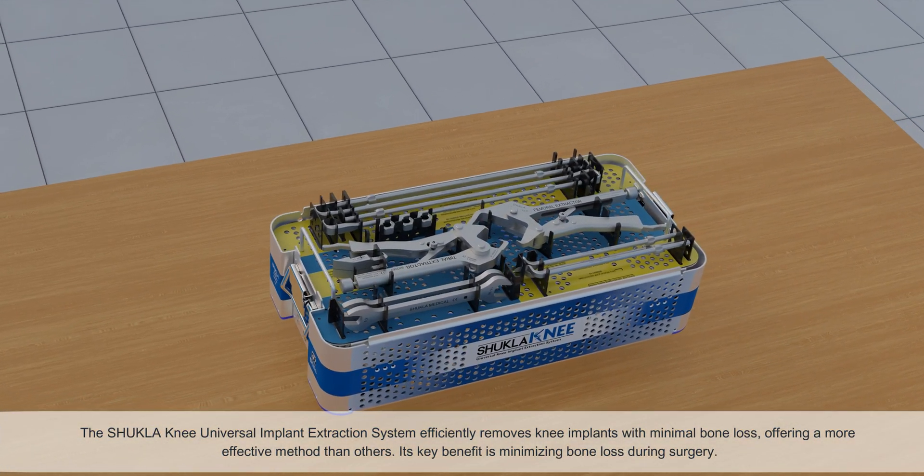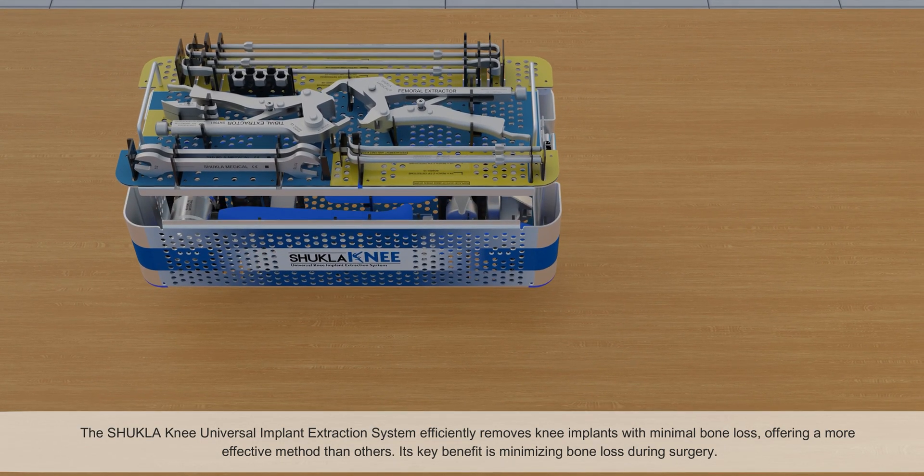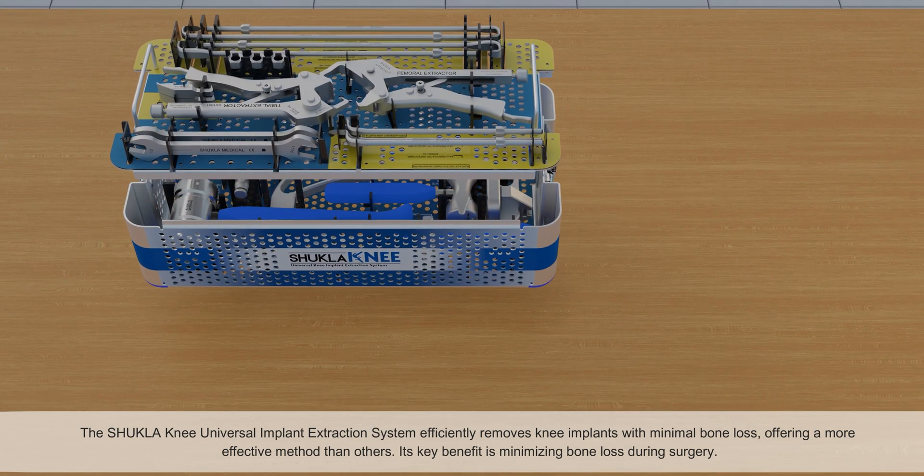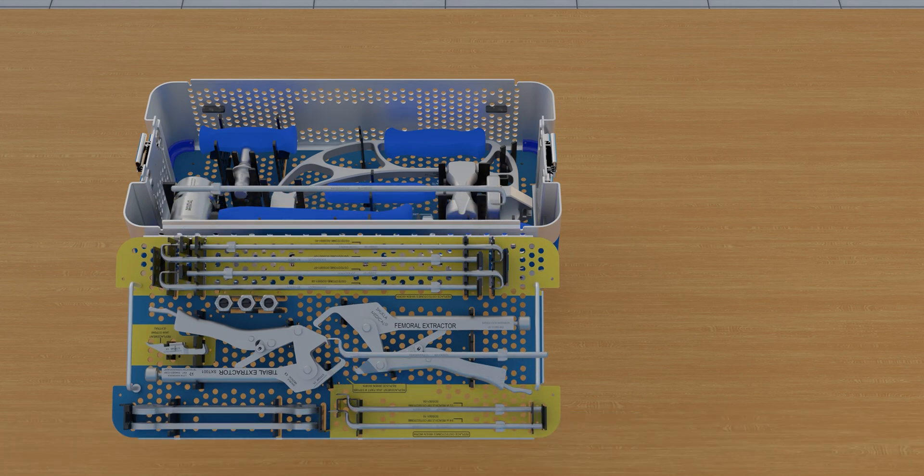The Shukla Knee Universal Implant Extraction System efficiently removes knee implants with minimal bone loss, offering a more effective method than others. Its key benefit is minimizing bone loss during surgery.